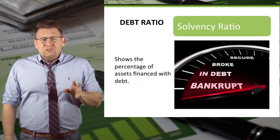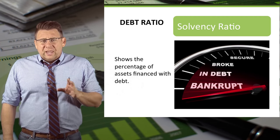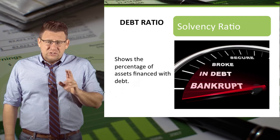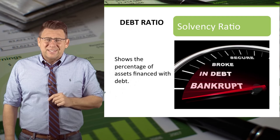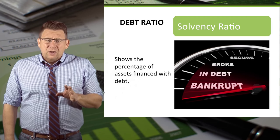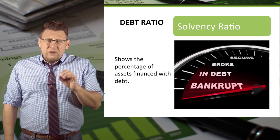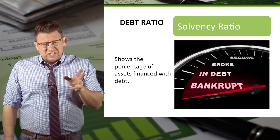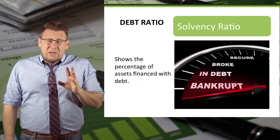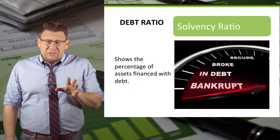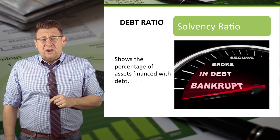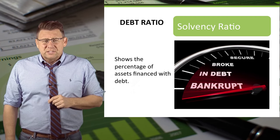In general, a debt ratio of less than 30% suggests the company isn't as efficient as it could be, whereas a ratio of more than 75% suggests possible bankruptcy if the company experiences a downturn in business.